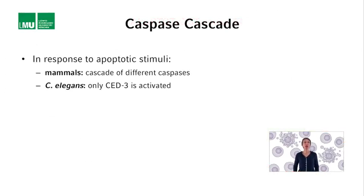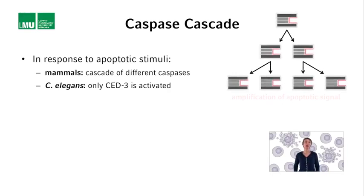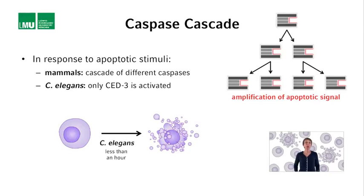In mammals, a cascade of caspases is activated in response to apoptotic stimuli. However, in C. elegans, it appears to be just one caspase, CED-3, that is activated. Why a cascade of caspases in mammals but not in C. elegans? A cascade of caspases may allow the amplification of the apoptotic signal, like a snowball effect, and may also allow for additional regulation. Since cells undergo apoptosis very fast in C. elegans - within less than an hour compared to presumably many hours or even days in mammals - an amplification step and additional levels of regulation may not be necessary in C. elegans. But that's just a speculation.